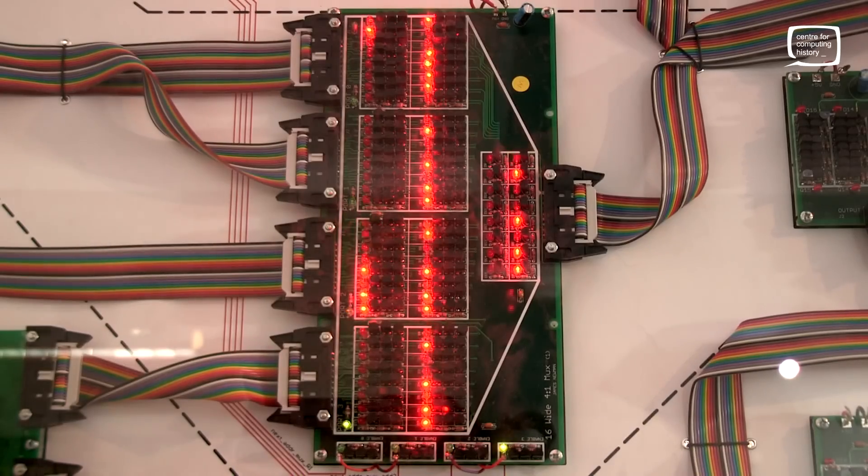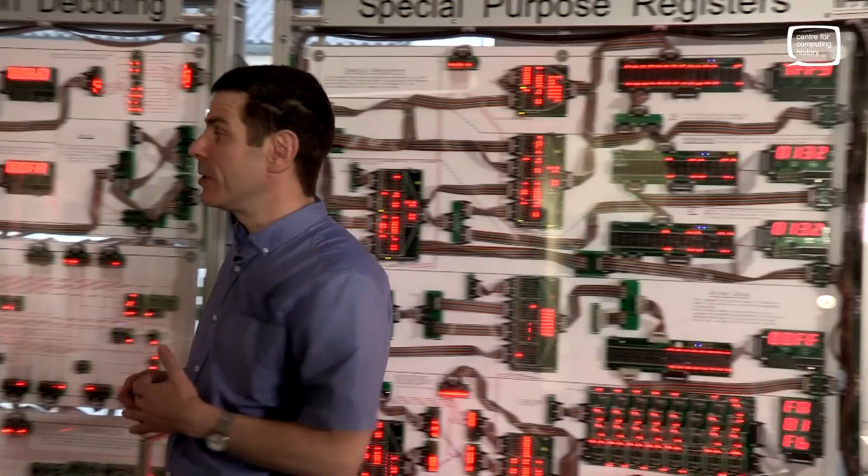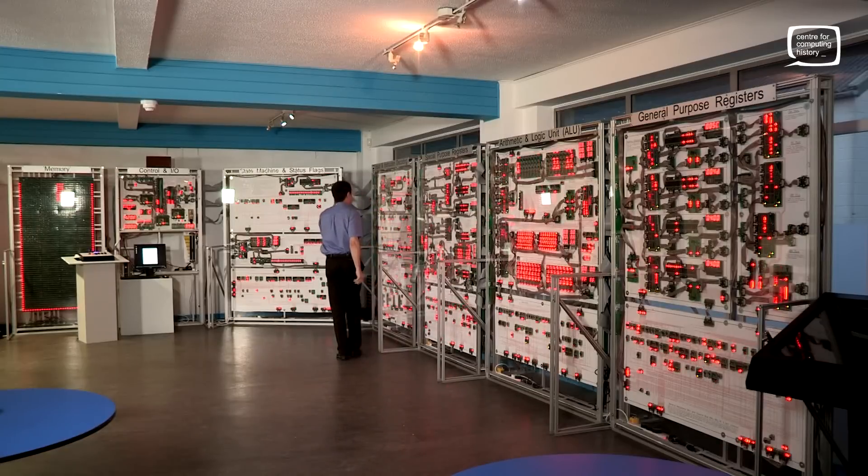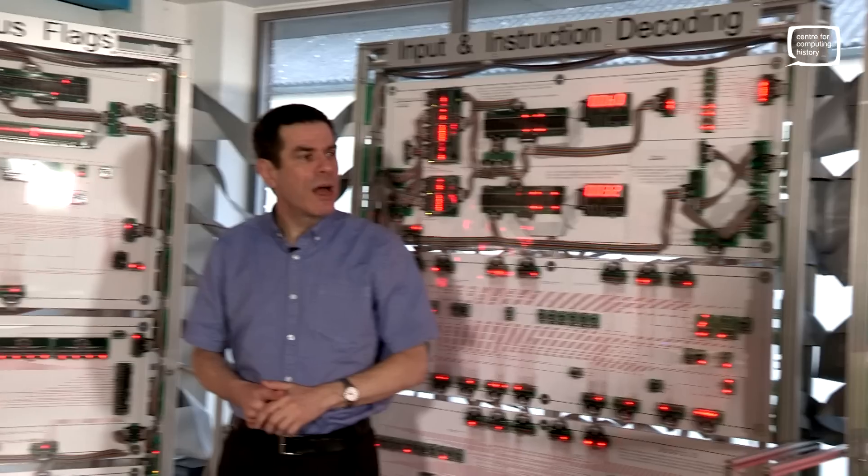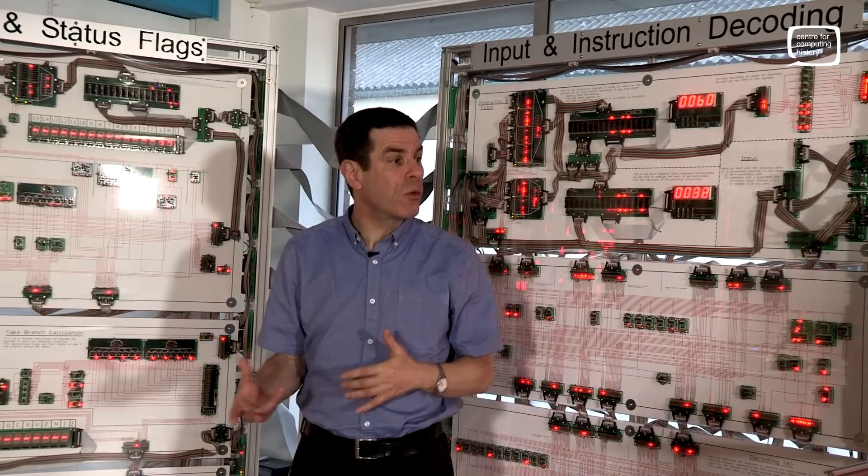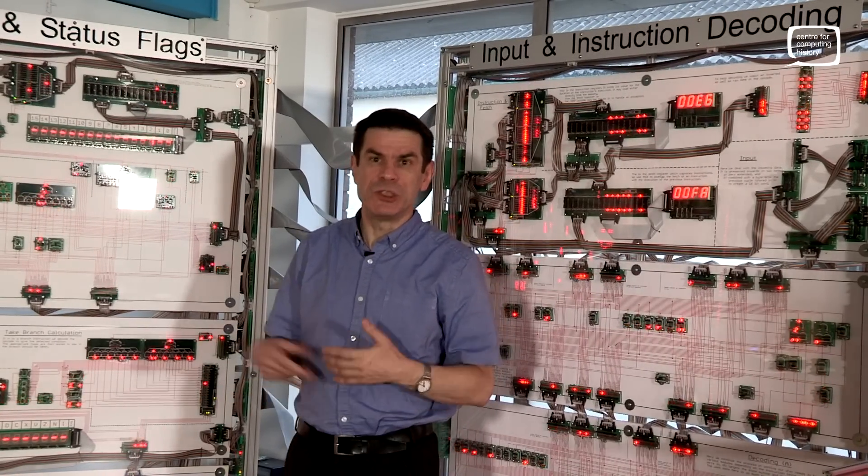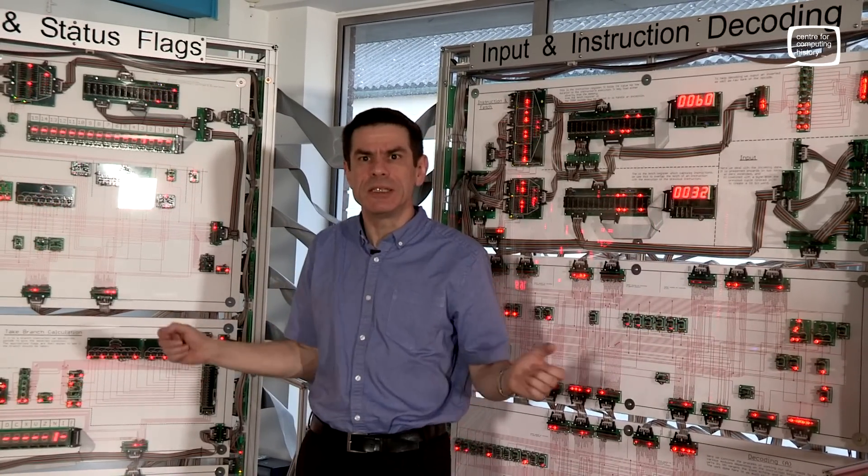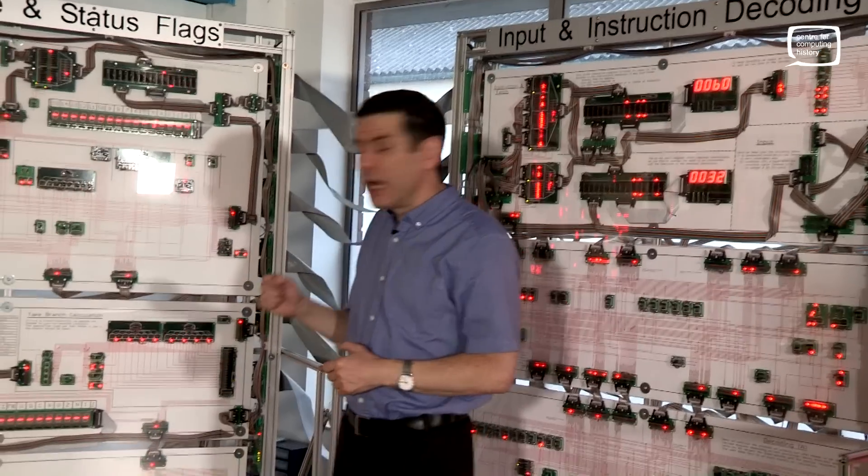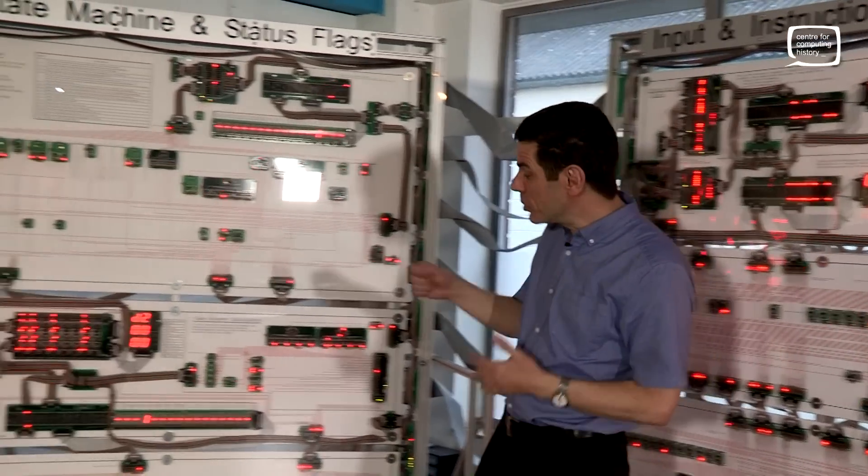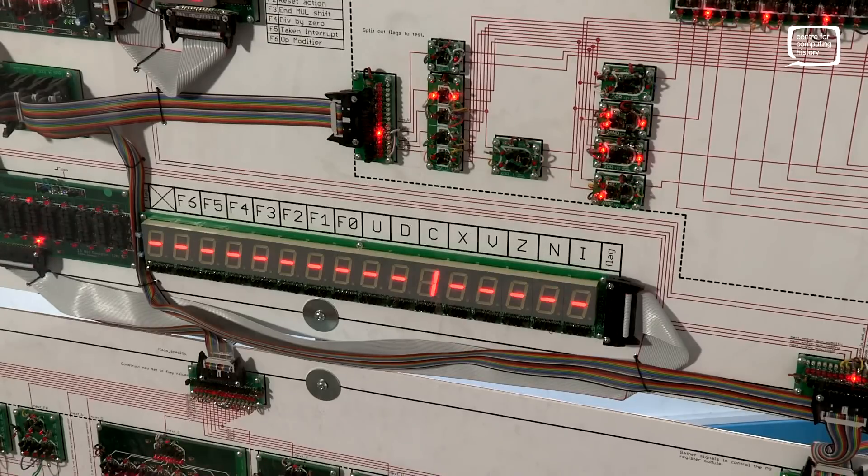So a couple of other really important registers for controlling what happens in a processor. So when we did arithmetic over there, we sometimes need to know what the results of the operation was, whether it was zero or negative, and we can use that for making decisions in the program. And the results of those operations are stored down here in the status register.